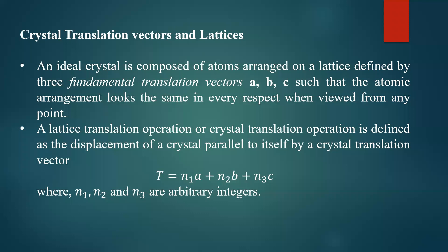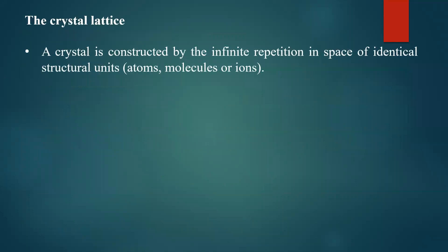If you shift the system from one point to another by multiples of a, b, c, the system will not lose its symmetry — it will remain unchanged. That is the crystal translational vector. a, b, c are called crystal translation vectors. Vector T connects any two lattice points — you are moving the entire system from one group of lattice points to another.